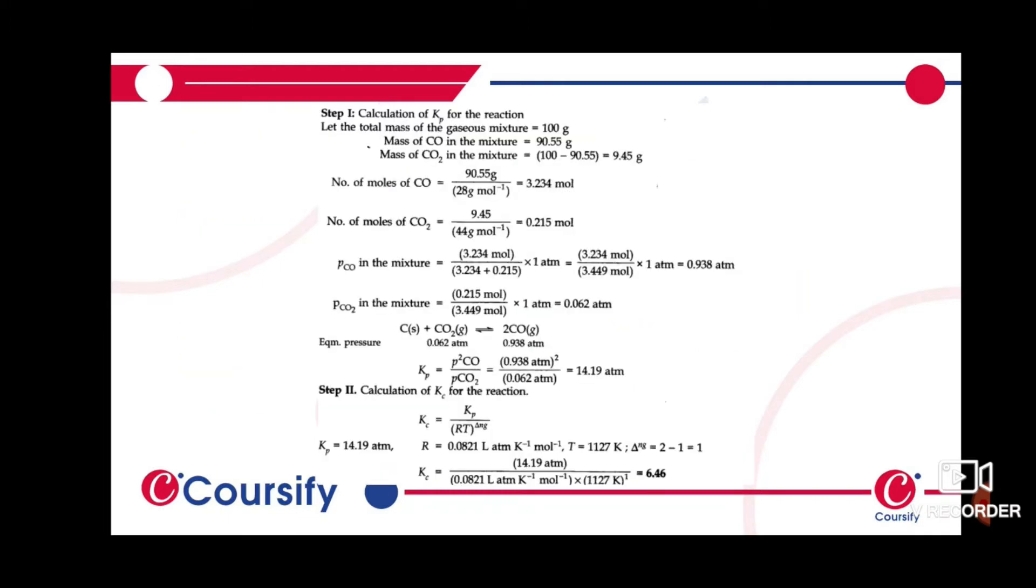First, we solve for carbon monoxide. Taking total mass of the gaseous mixture as 100 grams, we have 90.55 grams carbon dioxide and the remaining mass, 9.45 grams, is carbon monoxide. Then we calculate number of moles for both carbon monoxide and carbon dioxide.